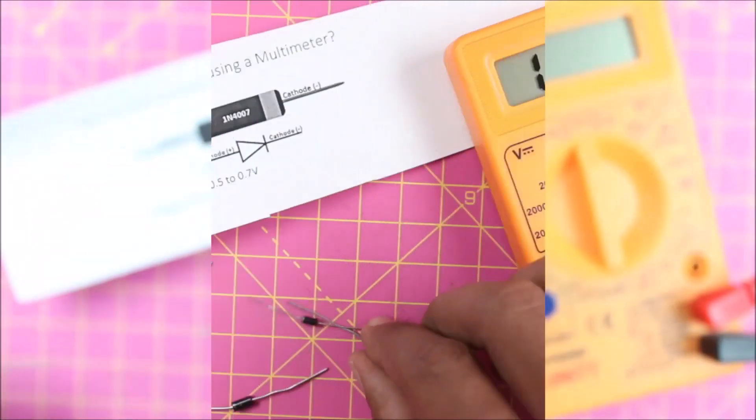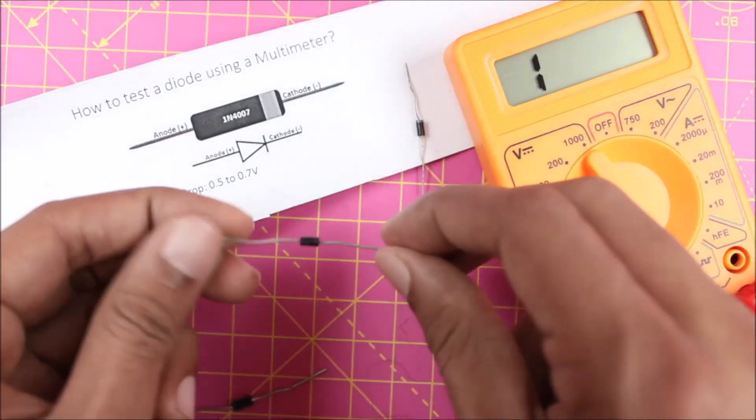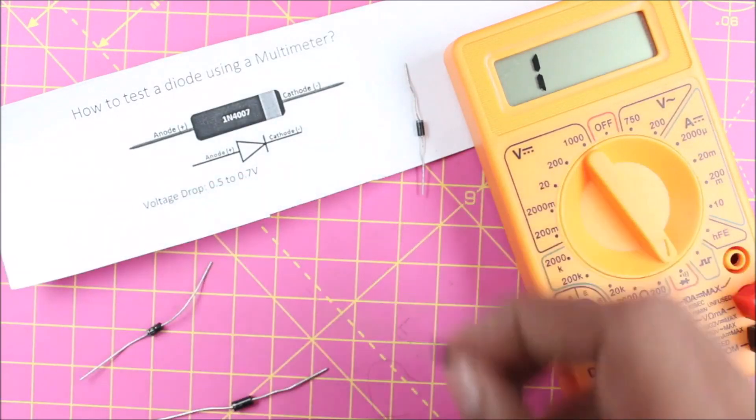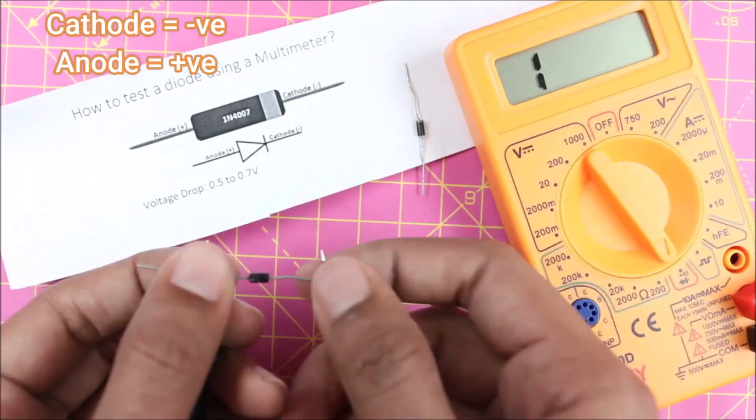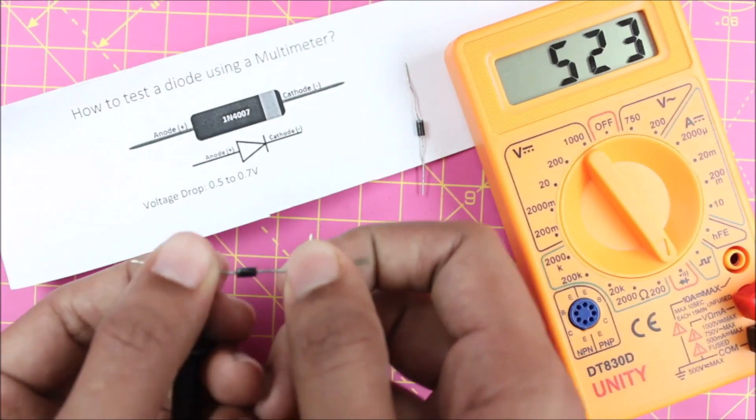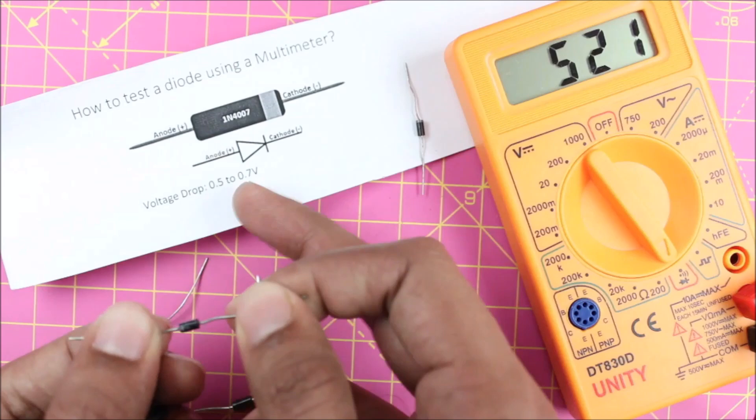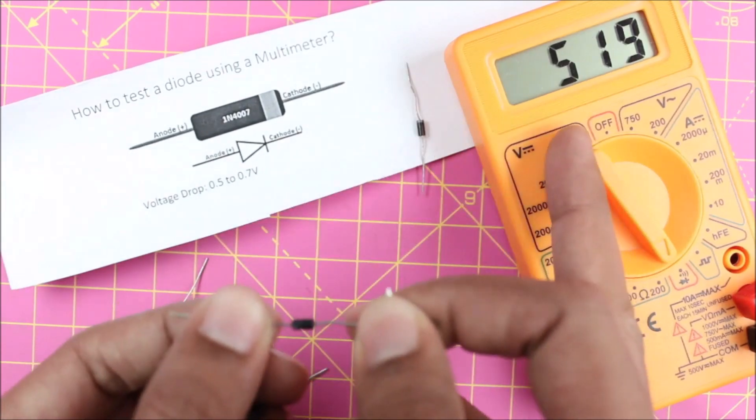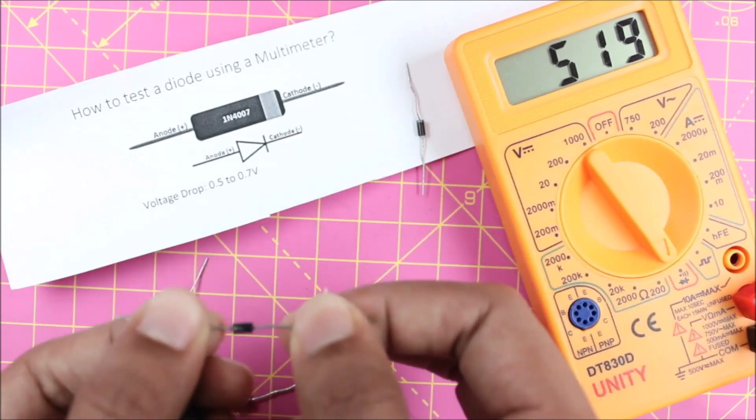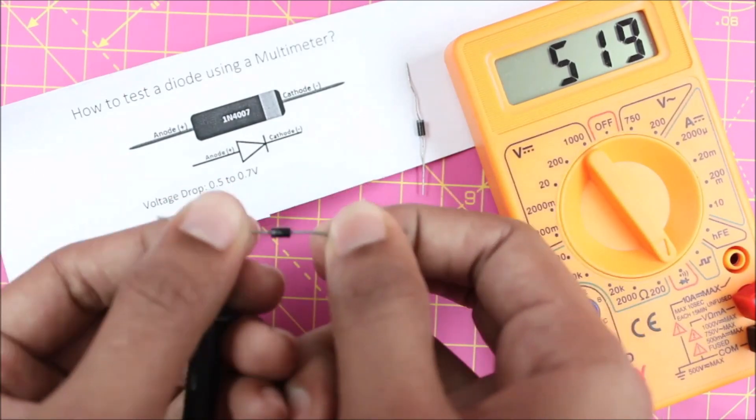Now on the multimeter, just put it into the diode mode. Then you can take your probe, place the black one on the cathode terminal and the positive probe on the anode terminal. You will get a voltage reading which should be between 0.5 volts to 0.7 volts. As you can see, we are getting 519 millivolts or 0.519 volts, which is within the permissible limits.